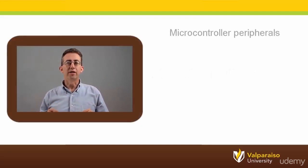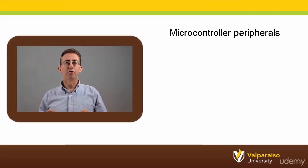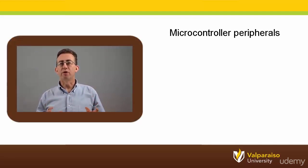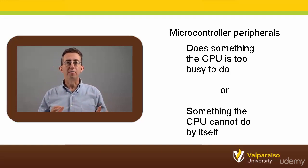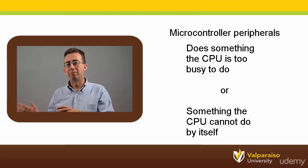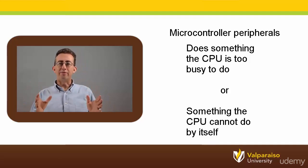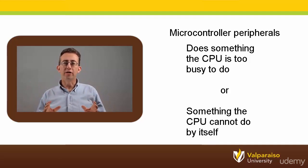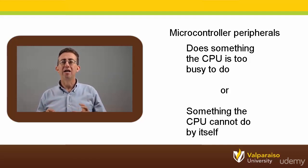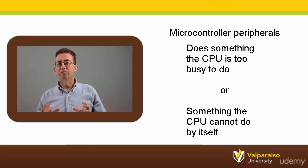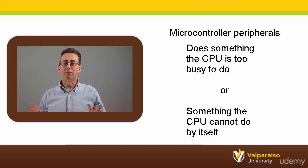Earlier in the class we introduced the concept of microcontroller peripherals. We said peripherals are parts of the microcontroller that do something the CPU is too busy to do, or something the CPU cannot do by itself. After defining peripherals, we introduced the watchdog timer and general purpose timer peripherals. Now we want to revisit general purpose timers and see how a special type of function called an interrupt service routine can make peripherals even more useful.